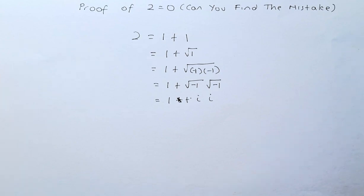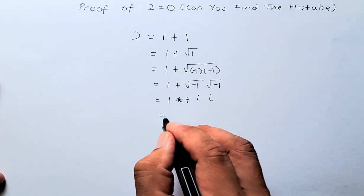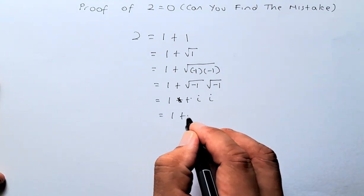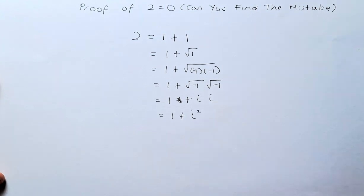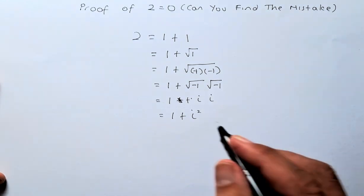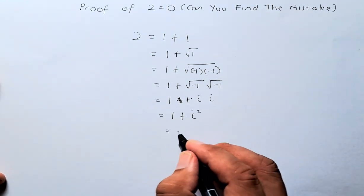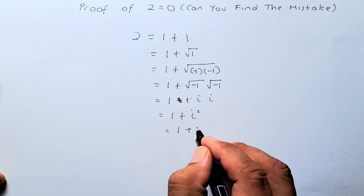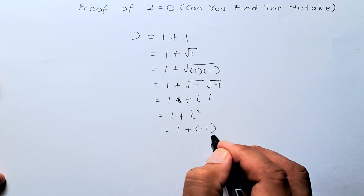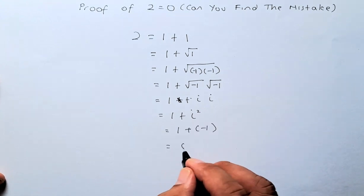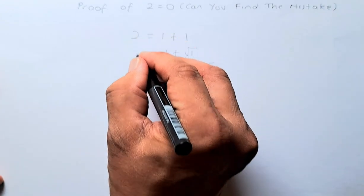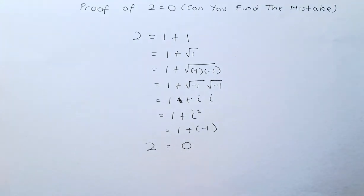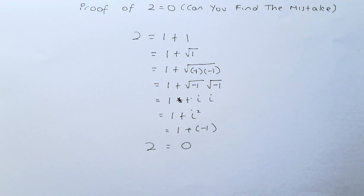When i is multiplied by i you get i squared, so it becomes 1 plus i squared. If you have done level 3 calculus, i squared equals negative 1, so it becomes 1 plus negative 1, which equals 0. Bringing down the 2, you get 2 equals 0. So where is the mistake in this proof?